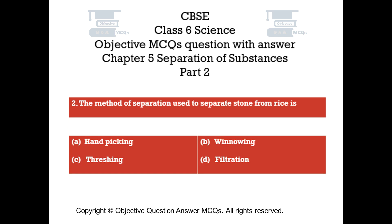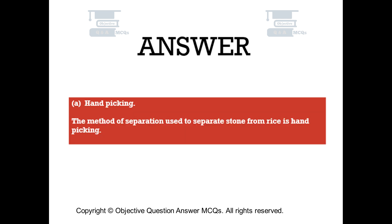Question number 2. The method of separation used to separate stone from rice is: Option A, Handpicking. Option B, Winnowing. Option C, Threshing. Option D, Filtration. The right answer is Option A — Handpicking. The method of separation used to separate stone from rice is handpicking.